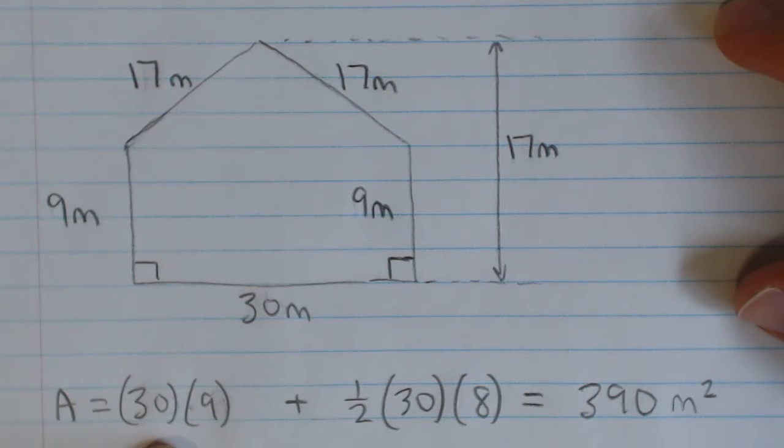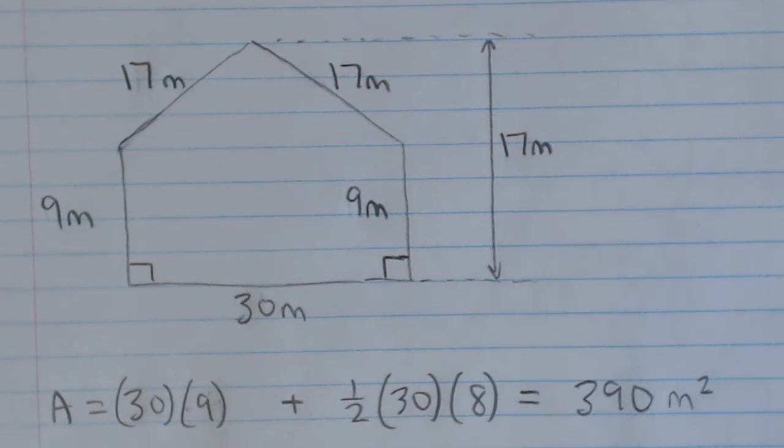So here, what's that? 270 plus 120. So that gives us, we add that together, it gives us 390. And because it's area, it's meters squared.